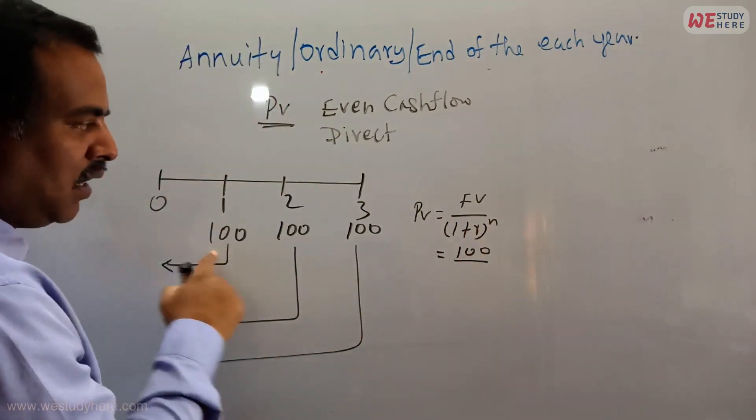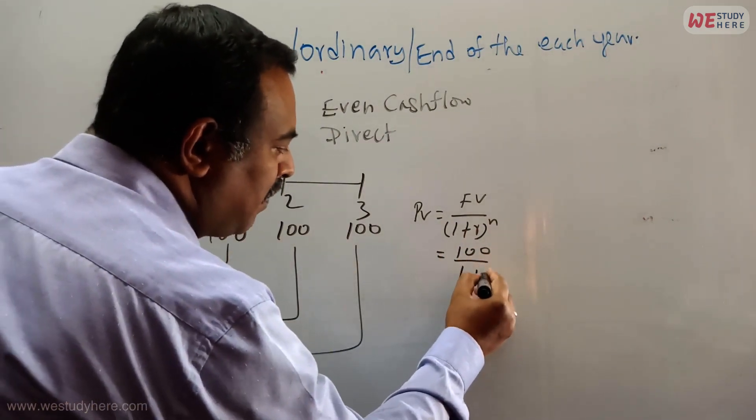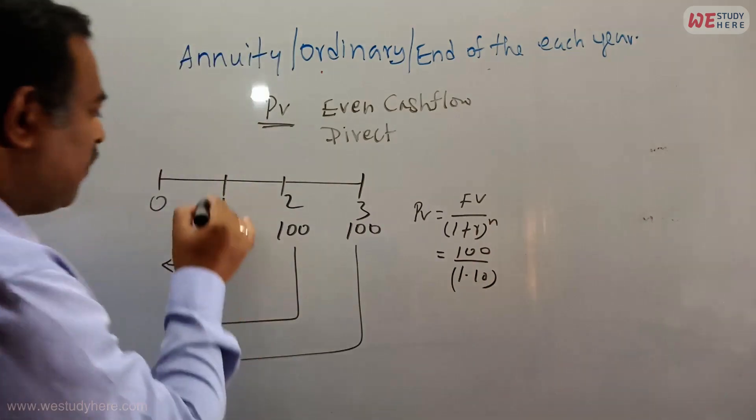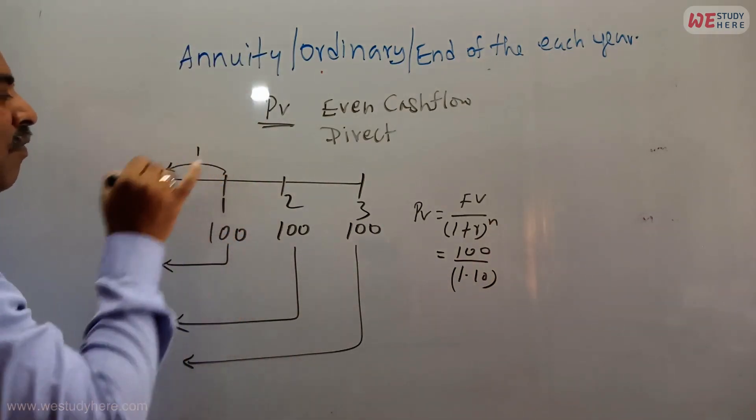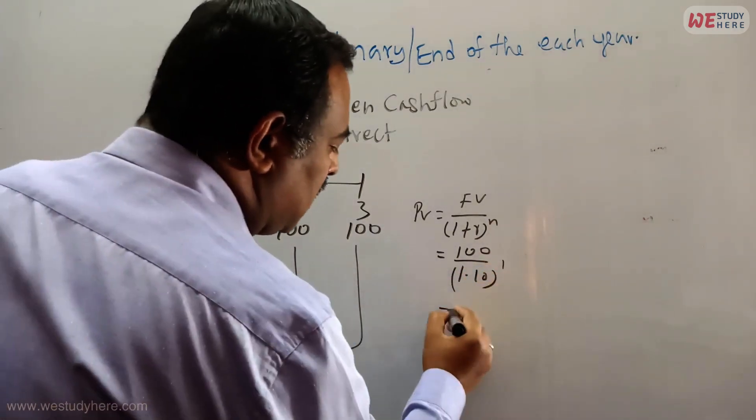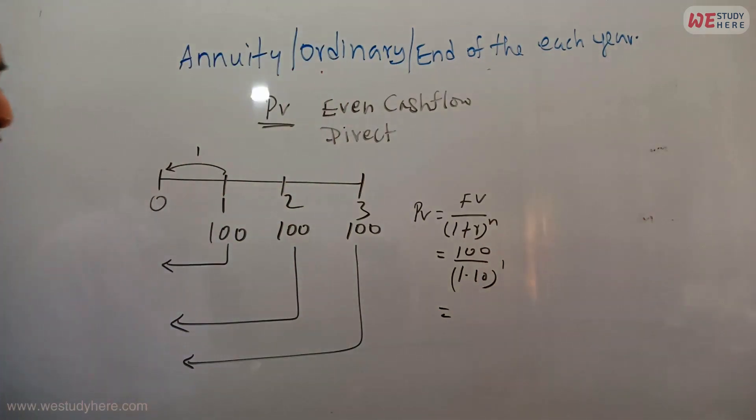If I take this 100, this 100, 1.10 percentage always from here to here, how many years? One year. Then 100 divided by 1.10. How much is the money value decreasing?